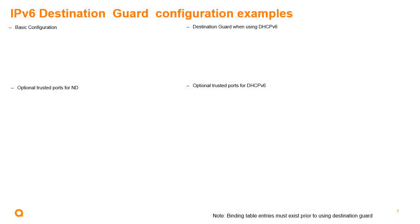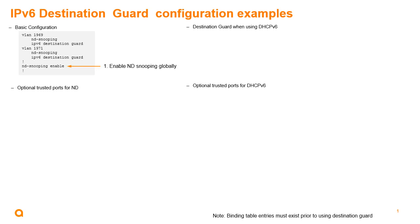Let's look at some IPv6 Destination Guard configuration examples. Starting with a basic example using ND snooping: first, you have to globally enable ND snooping. Second, under the VLAN context, you must also configure ND snooping. And then finally, you add IPv6 Destination Guard on that VLAN context too.